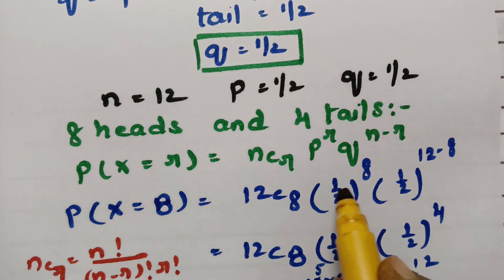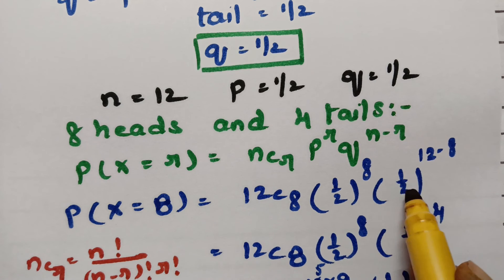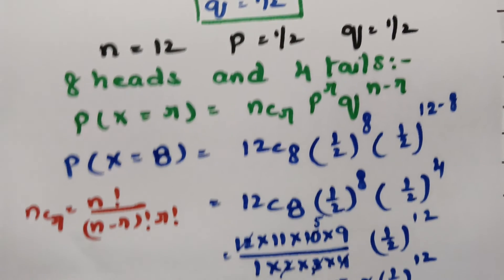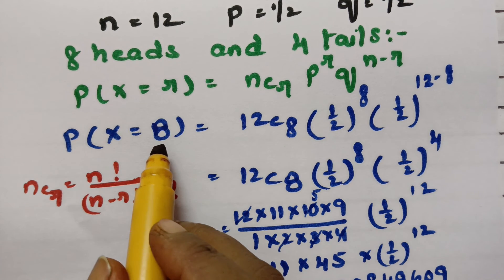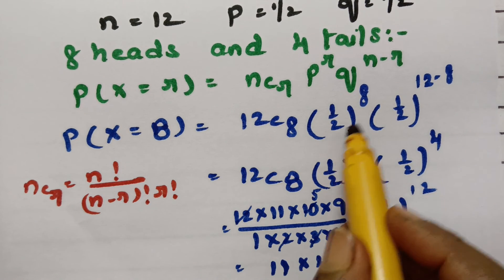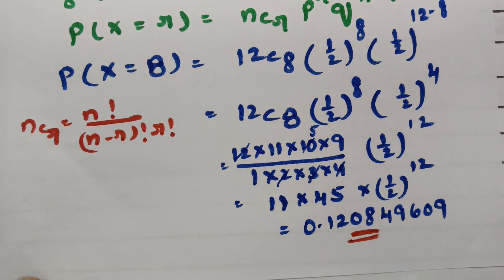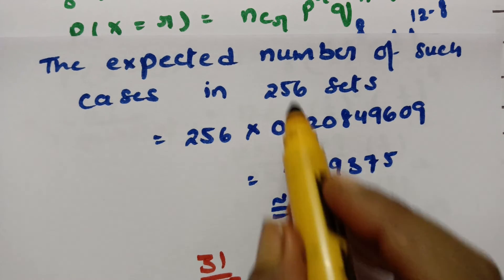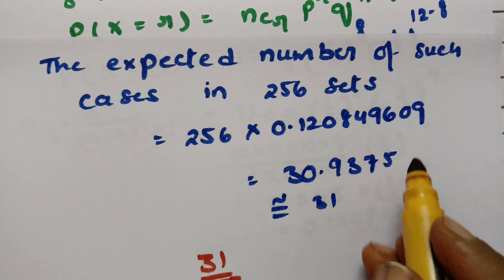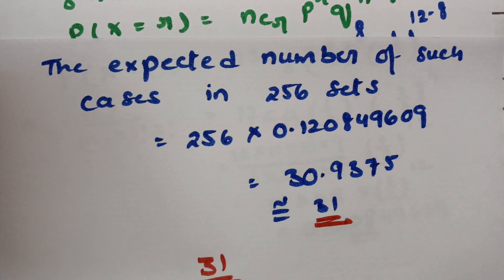Here the probability of getting a head is half, so getting 8 heads is (1/2) to the power of 8, and the probability of getting a tail for 4 times is (1/2) to the power 4. So R is selected as 8, giving 12C8 times P to the power 8 times Q to the power N minus 8. The expected number in 256 sets equals 31. Thank you so much for watching — please practice and share with your friends.